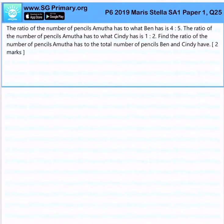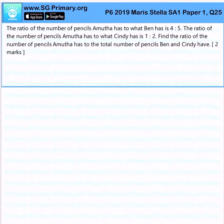The ratio of the number of pencils Amuta has to what Ben has is 4 to 5. The ratio of the number of pencils Amuta has to what Cindy has is 1 to 2. Find the ratio of the number of pencils Amuta has to the total number of pencils Ben and Cindy has.